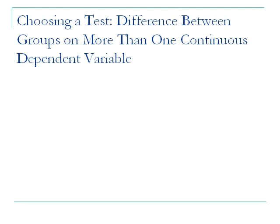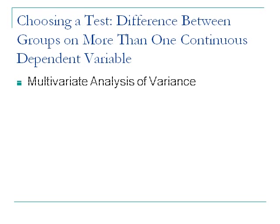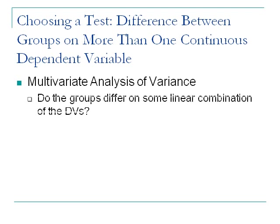So far we've talked about having just one dependent variable. If you have more than one DV, you'd do more than one test — frequently that may be the right thing to do. But sometimes you want to know if there are differences between groups on some combination of those dependent variables. If that's the case, you have a multivariate analysis, and for group differences, it's a multivariate analysis of variance — MANOVA.